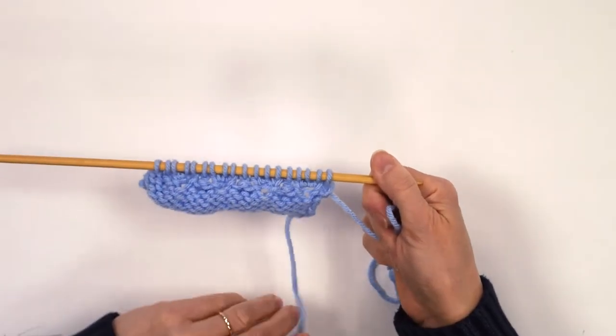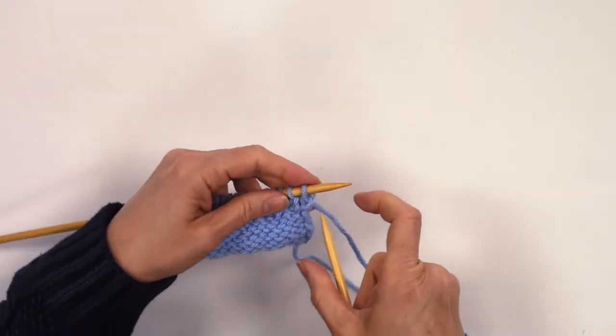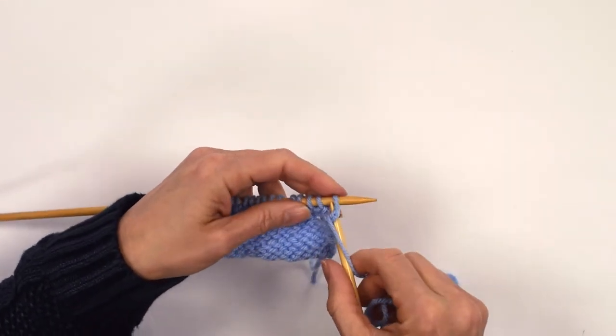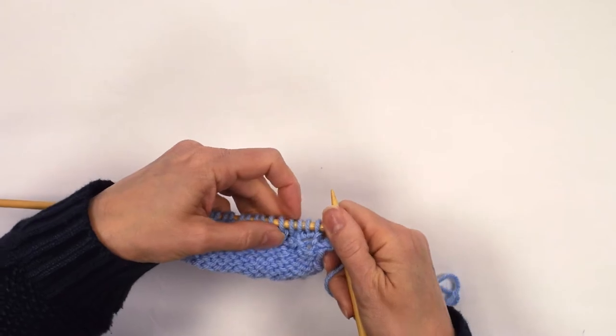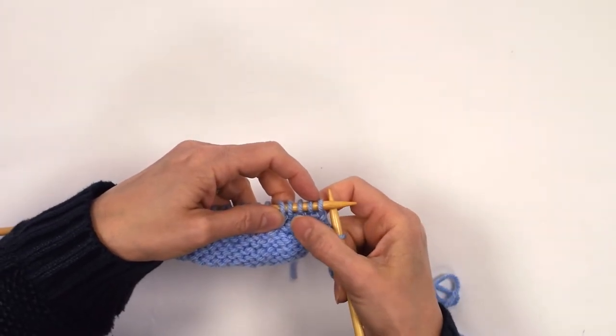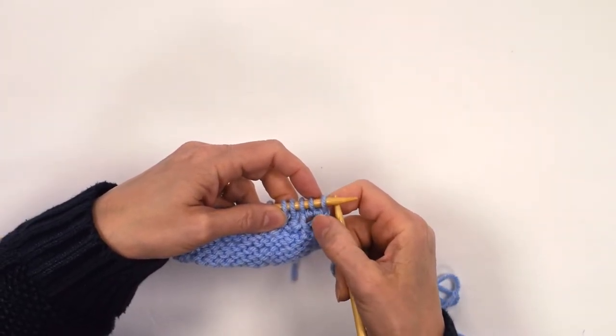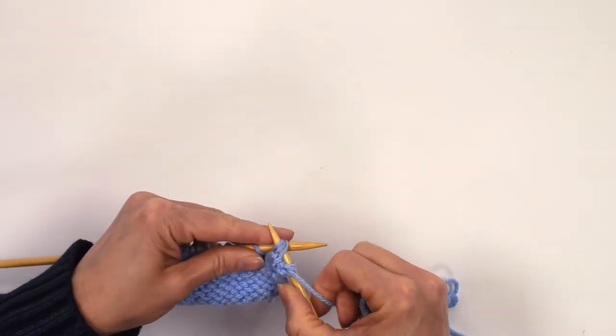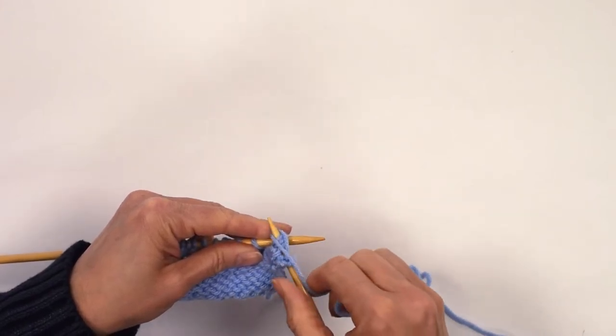Row four. We start with a purl one, and we're now going to purl three together. So those three stitches where we had one stitch which we made into three, they're going back to just being one stitch.